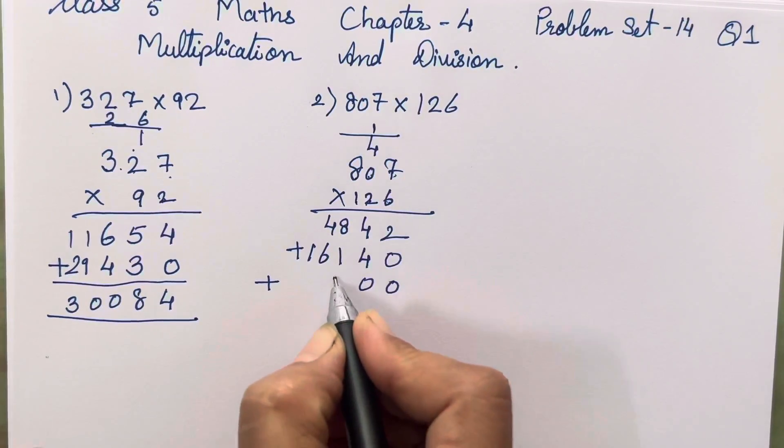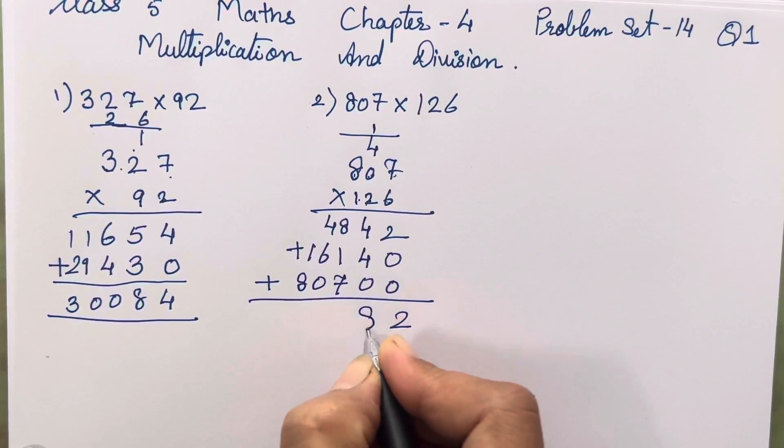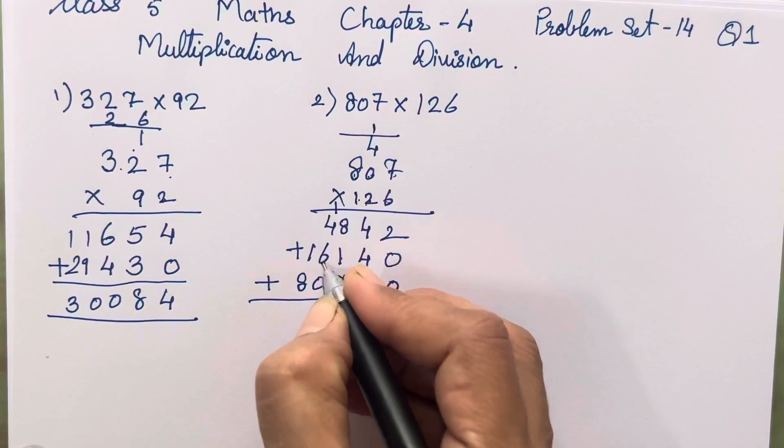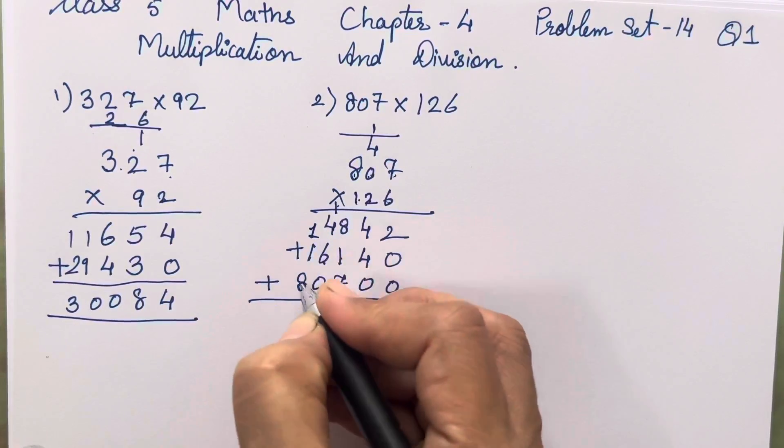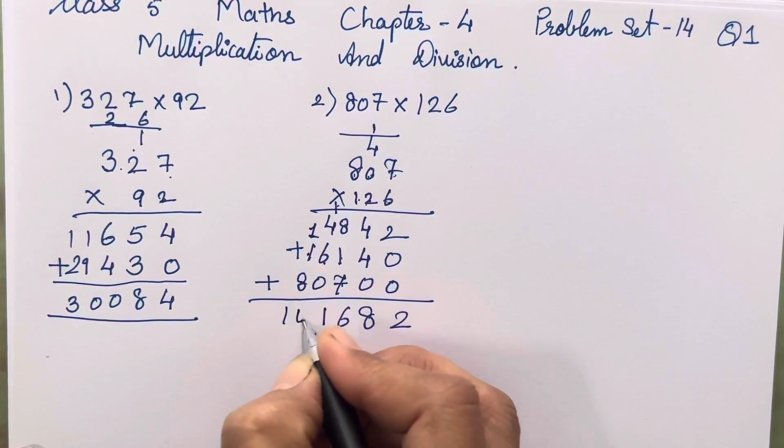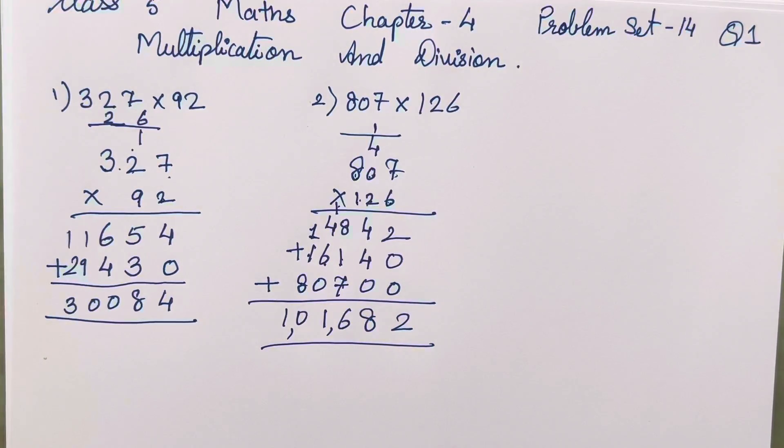The best way is to learn how to multiply it in this way. Now the last digit is 1. So 1 seven is 7, 1 zero is 0, 1 eight is 8. So 2, 8. 8 plus 8 is 16, 6 plus 4 is 10, 10 plus 1 is 11, 9 and 10. So 101,682 is your answer.